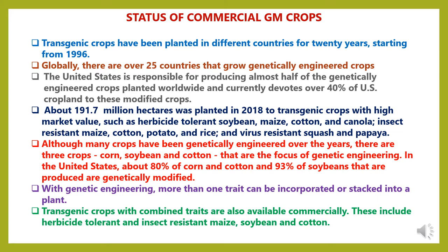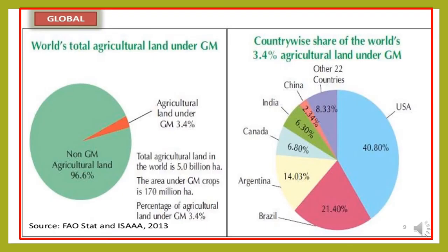Although many crops have been genetically engineered over the years, there are three crops — corn, soybean and cotton — that are the focus of genetic engineering. In the United States, about 80% of corn and cotton and 93% of soybean are genetically modified crops. With genetic engineering, more than one trait can be incorporated into a plant. Transgenic crops with combined traits are also available commercially, including herbicide-tolerant and insect-resistant maize, soybean and cotton.